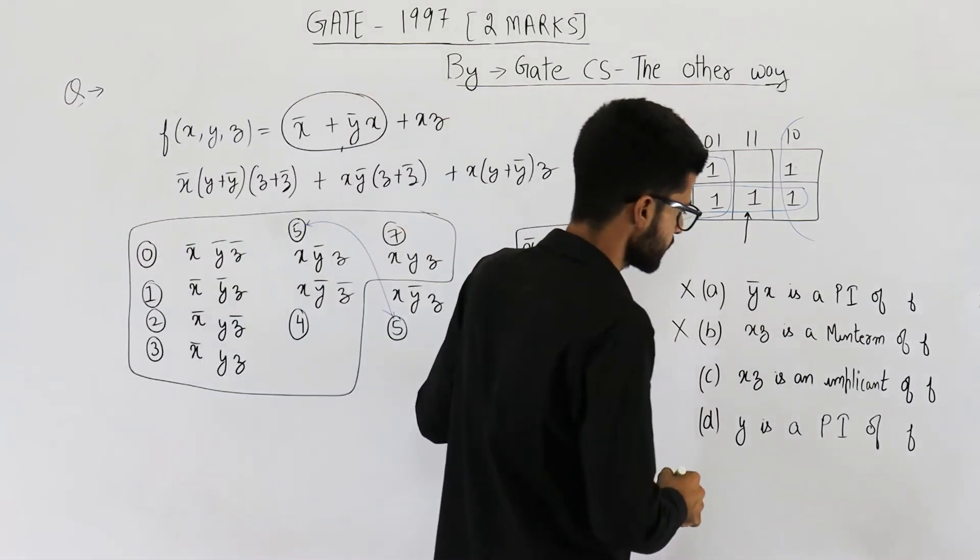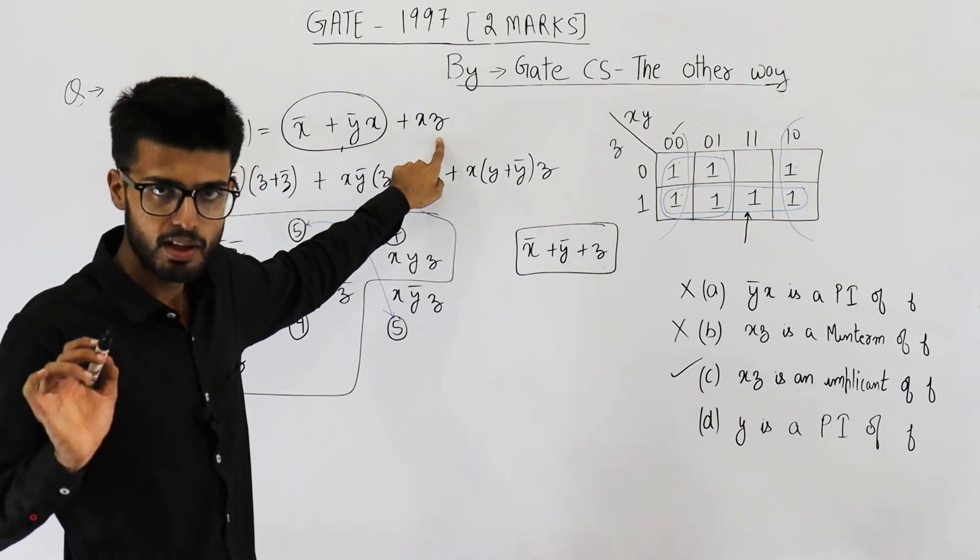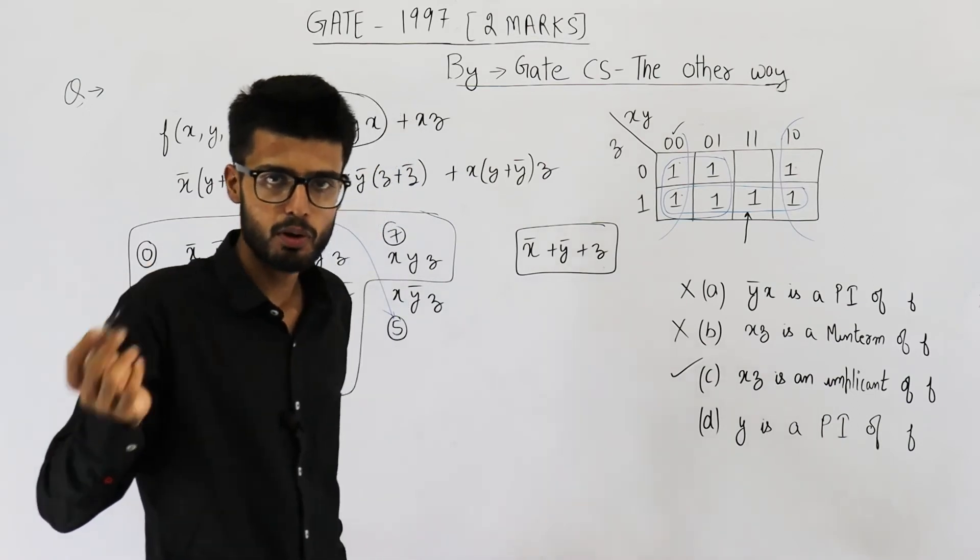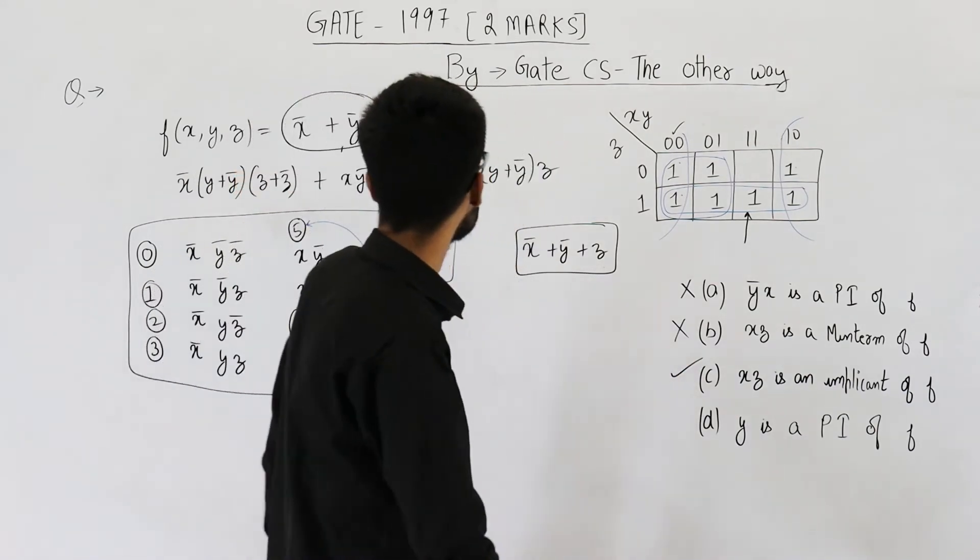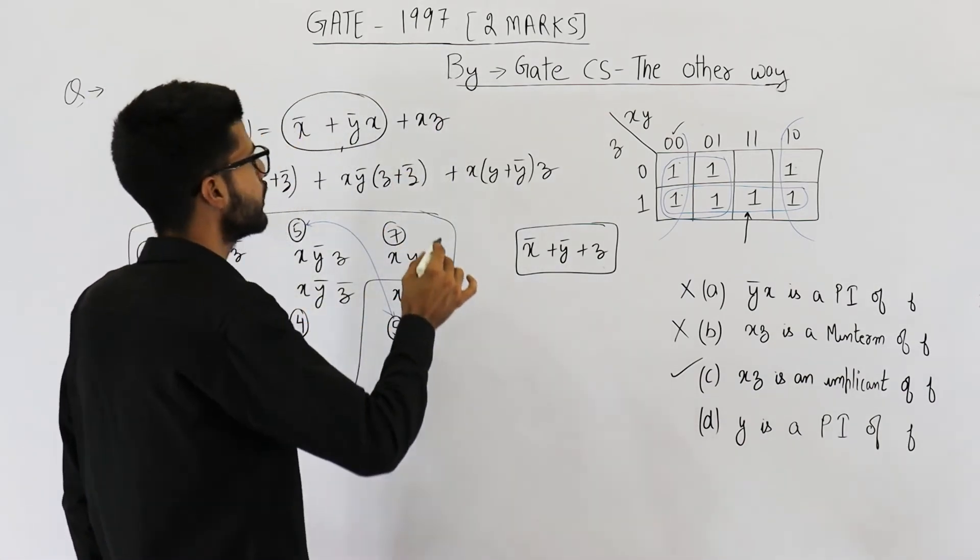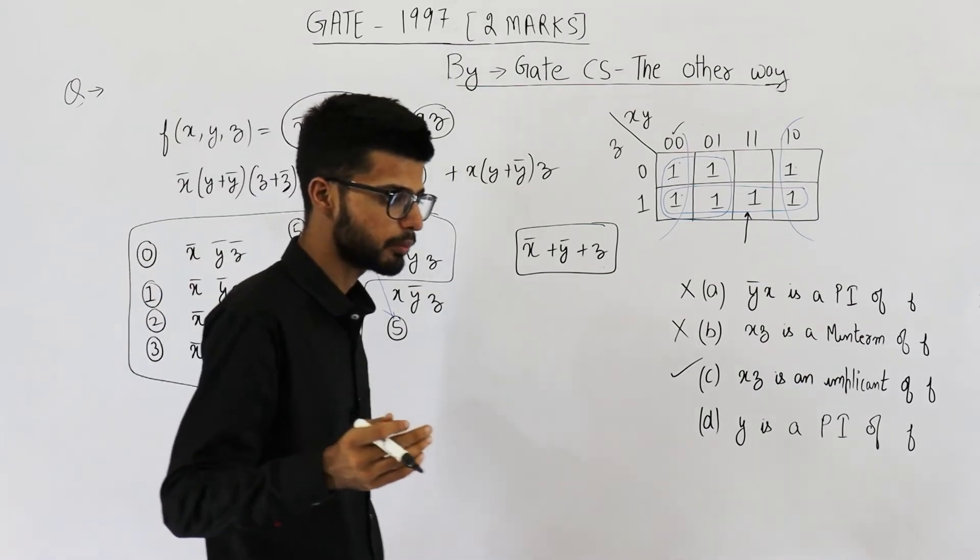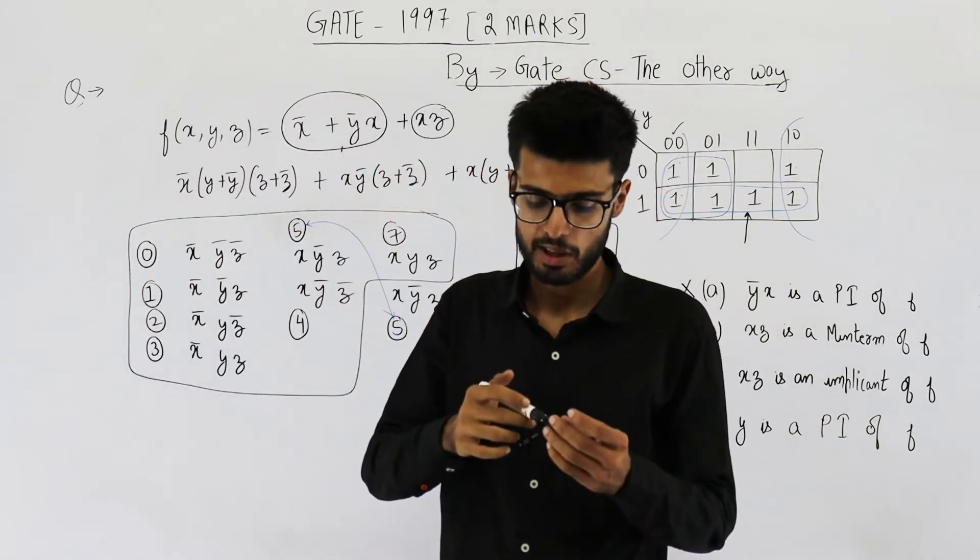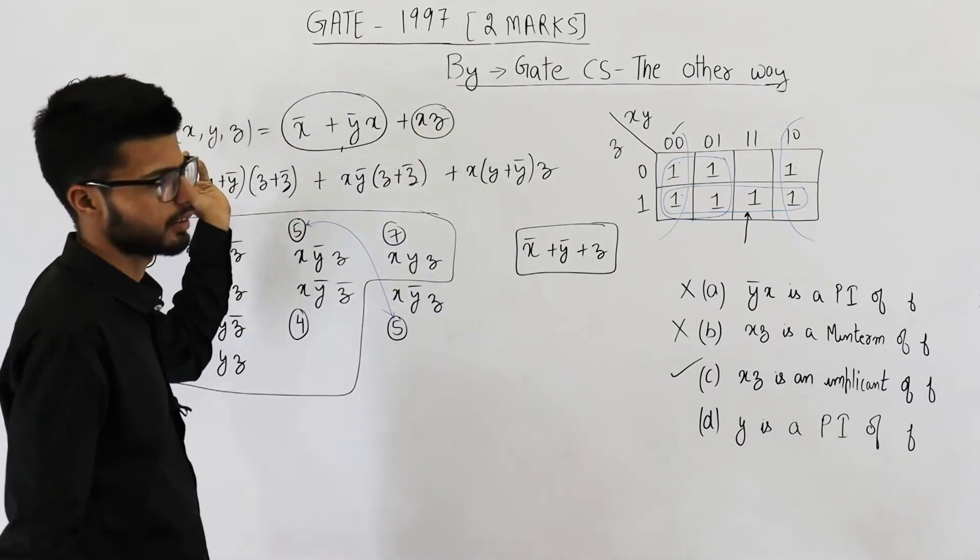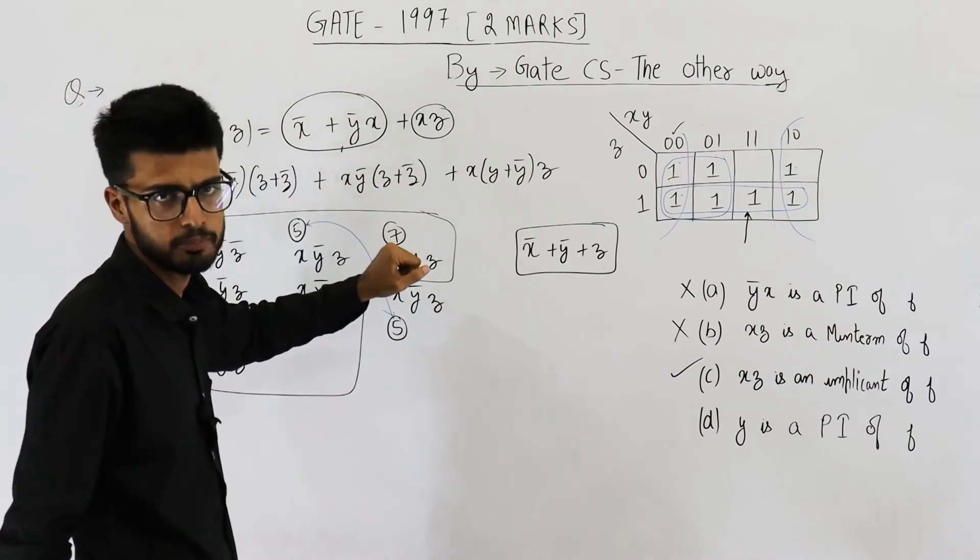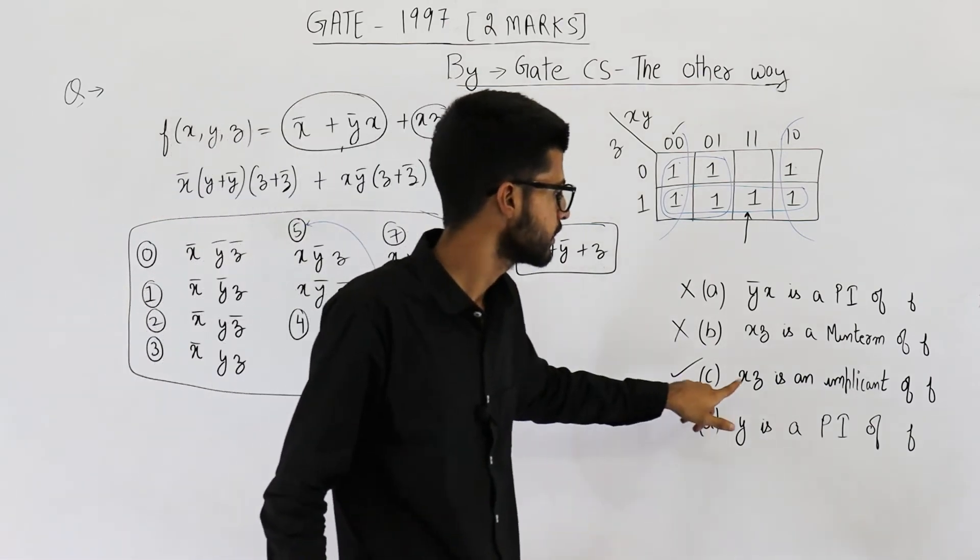Now let's analyze option C. X, z is an implicant of F. Yeah, this has to be correct because x, z is present here. Any term which is any product term which is present in any step of derivation is always an implicant. What this means is, whenever, implicant means whenever x, z is one. Whenever x, z is one, entire function will be one. Let me repeat it or let me rephrase it. Whenever value of implicant is one, the value of function has to be one. Now you can simply see that whenever x, z is one, this would lead to one. Because you have an OR between all these three. Any one of these three, if leads to one, the function's value will be one. So option C, x, z is an implicant is true.